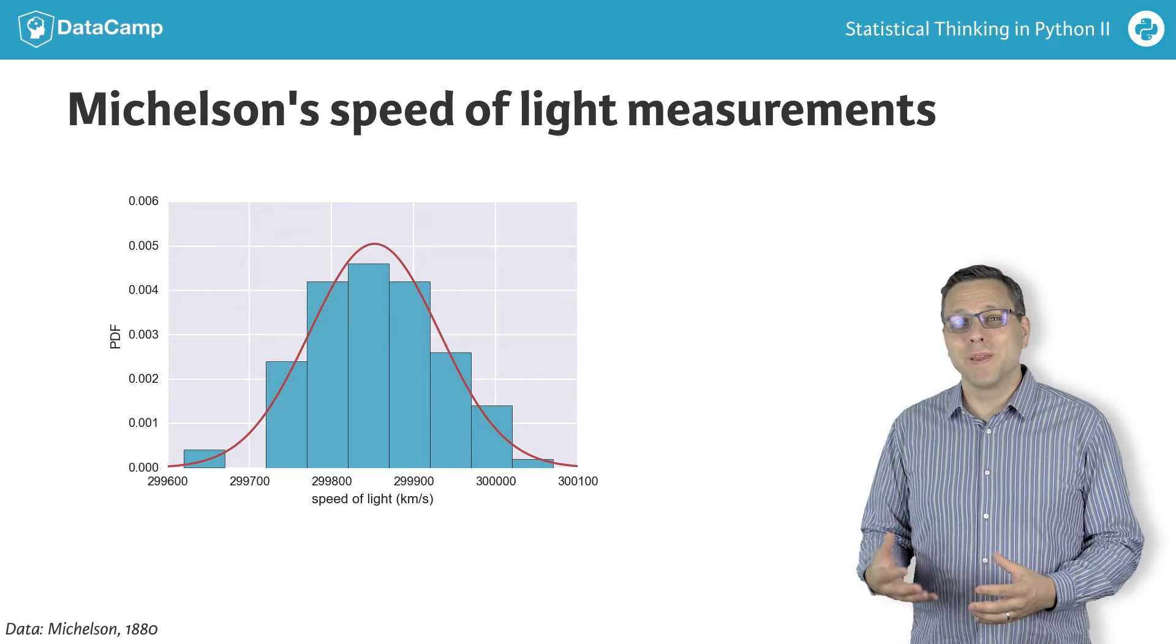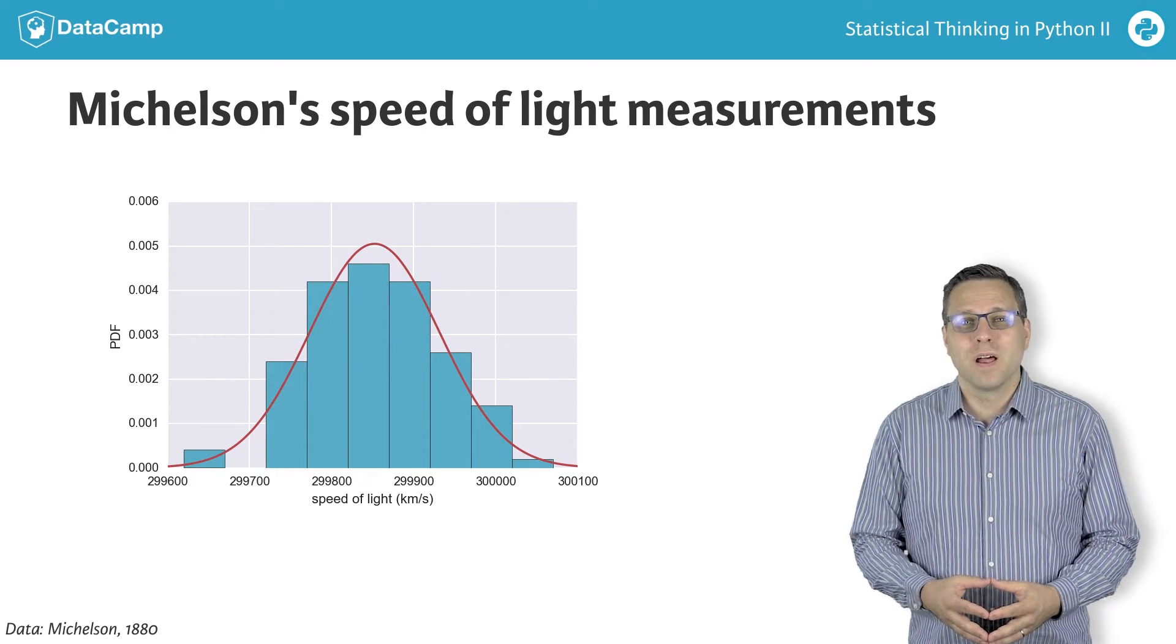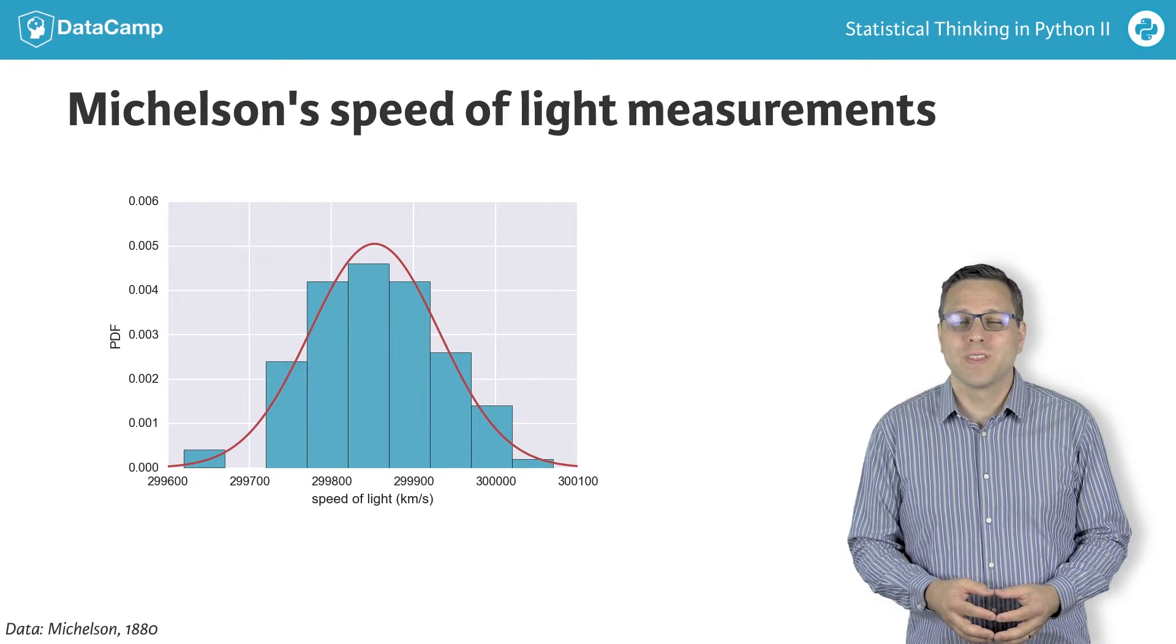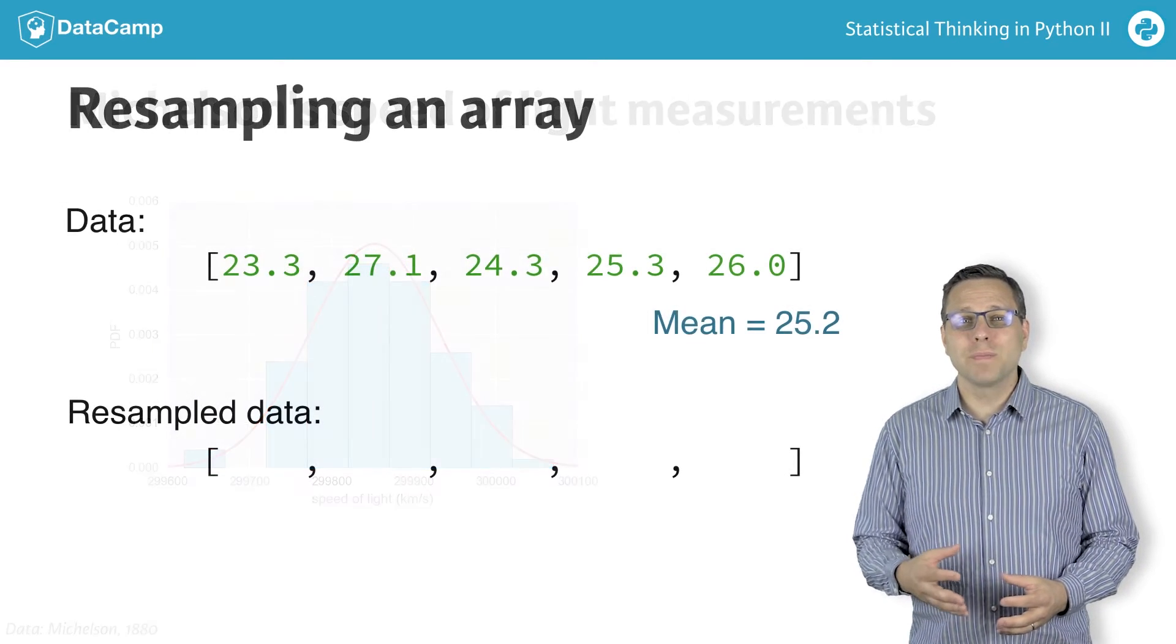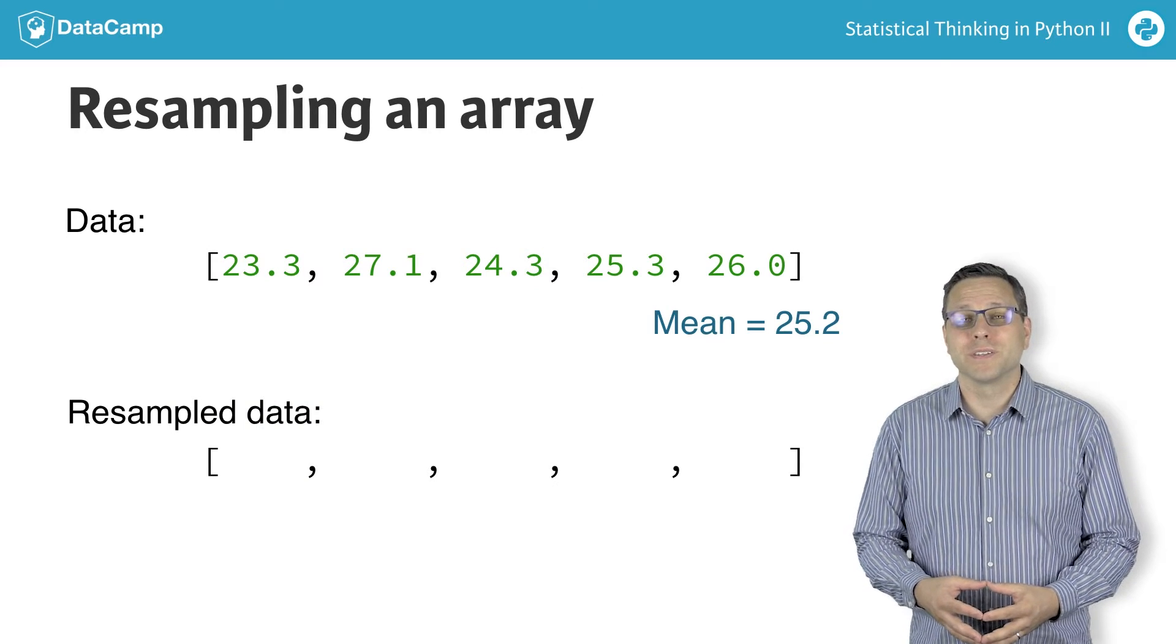Unfortunately, actually repeating the experiment lots and lots of times is just not possible. But as hackers, we can simulate getting the data again. The idea is that we resample the data we have and recompute the summary statistic of interest, say the mean.